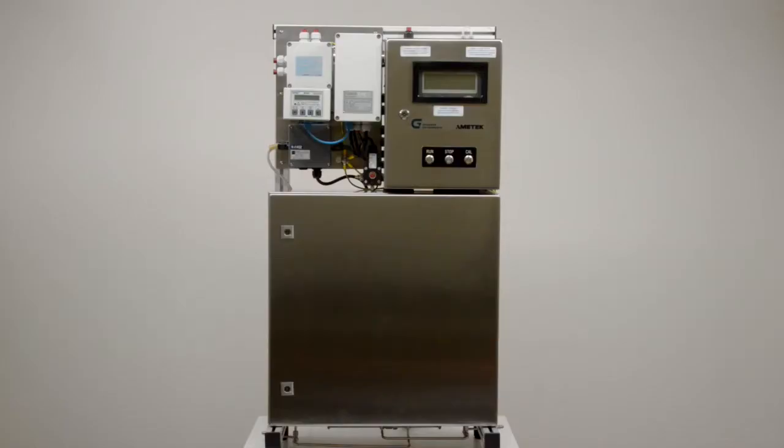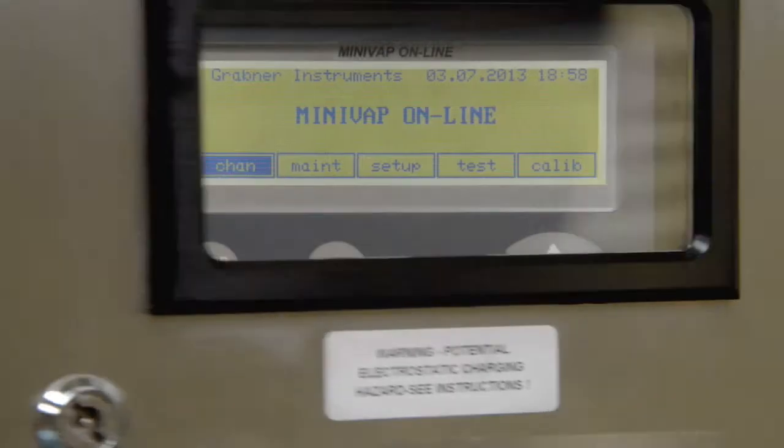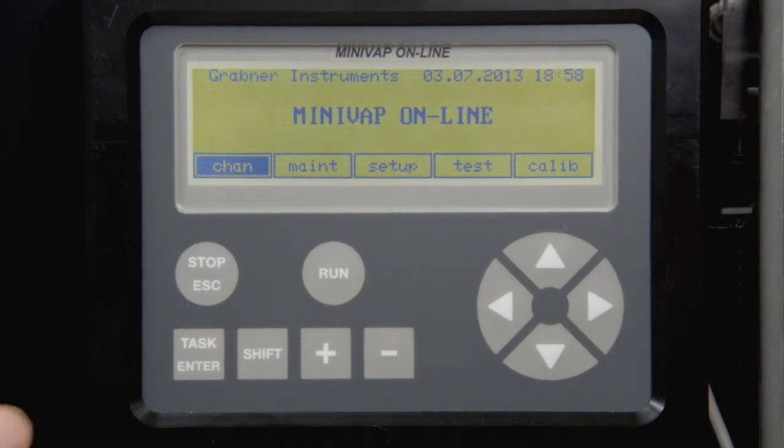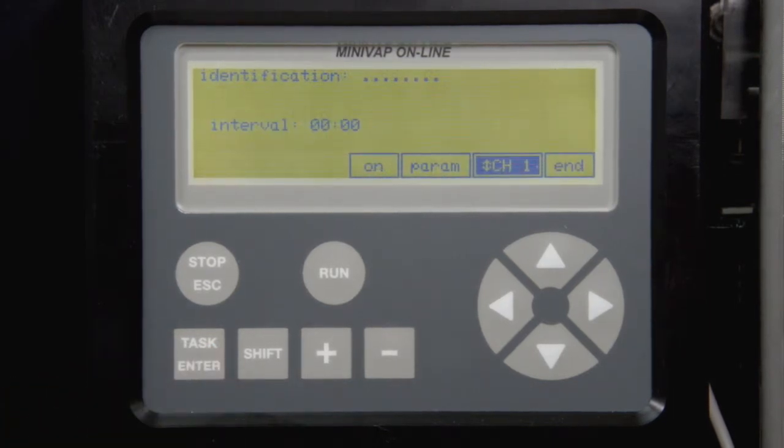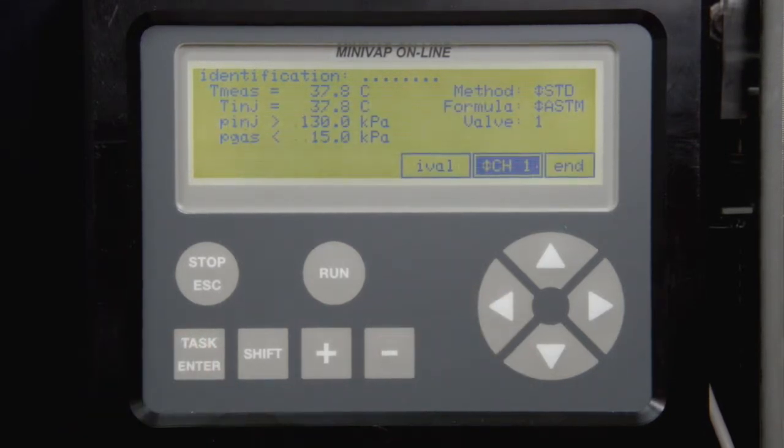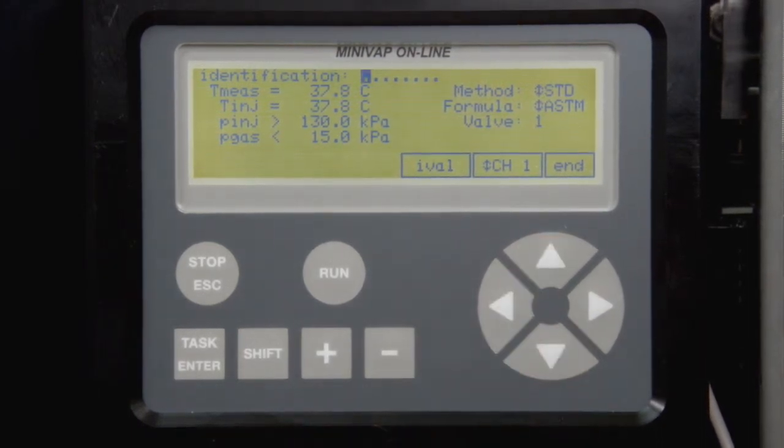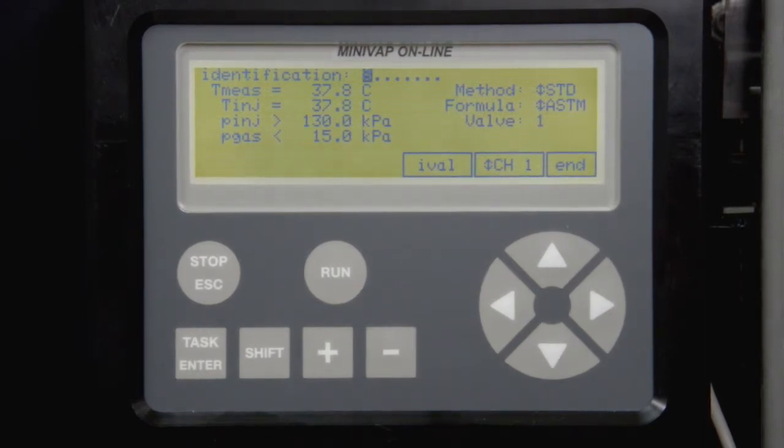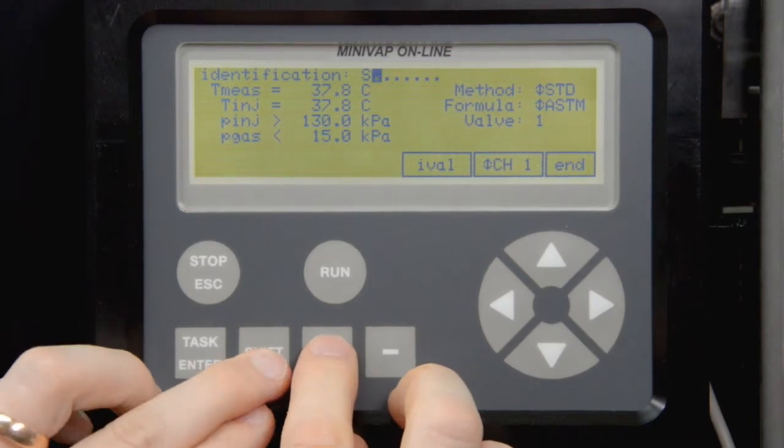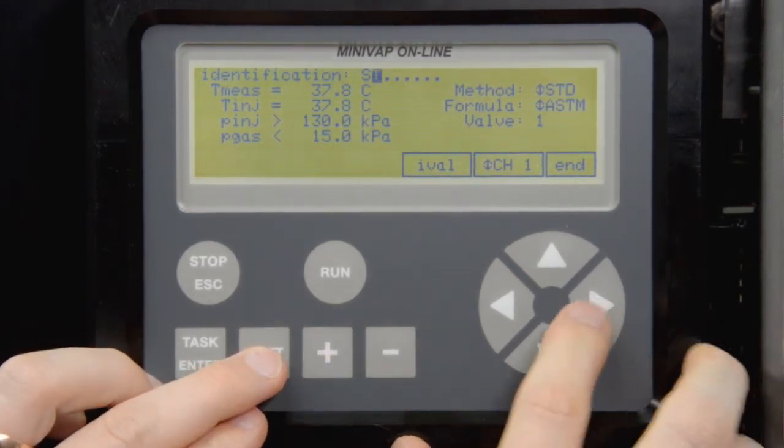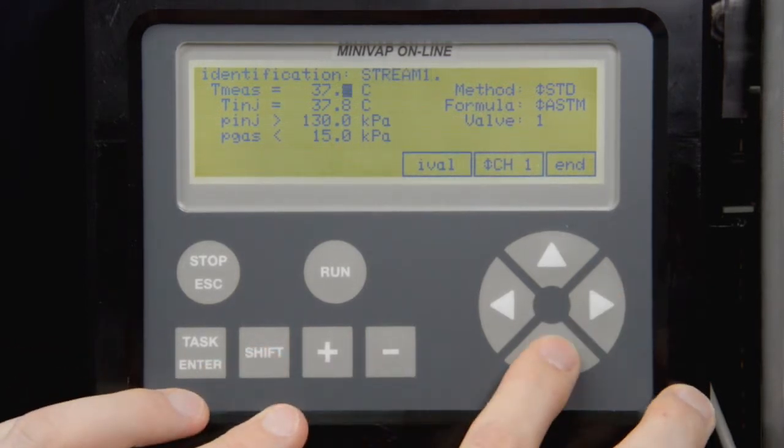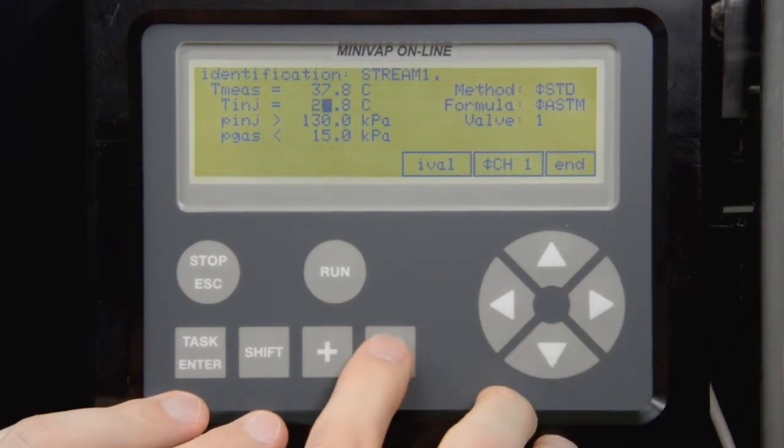Programming. Six measuring channels and one calibration channel can be programmed. Each channel can be programmed individually so that different methods can be programmed to run on the same sample stream. To program the measuring channels, put the cursor on Chan and press Task. Go to Parameters and press Task. Place the cursor to Channel 1 and select a measuring channel. Enter the channel identification. Use the plus-minus keys to scroll through the characters or use Shift and plus-minus keys for fast scrolling. Select measuring and injection temperature, the minimum injection pressure and the maximum gas correction.